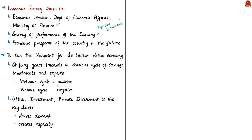The Economic Survey provides insights into the economic prospects of India in the future. Based on this survey, the general budget of India would have been prepared, which has been presented in Parliament today and will be covered in tomorrow's Hindu News Analysis. The Economic Survey 2018-19 sets out a blueprint for a 5 trillion dollar economy and focuses on shifting gears towards a virtuous cycle — a virtuous cycle of savings, investments and exports — to transform India into a 5 trillion dollar economy in the next five years.